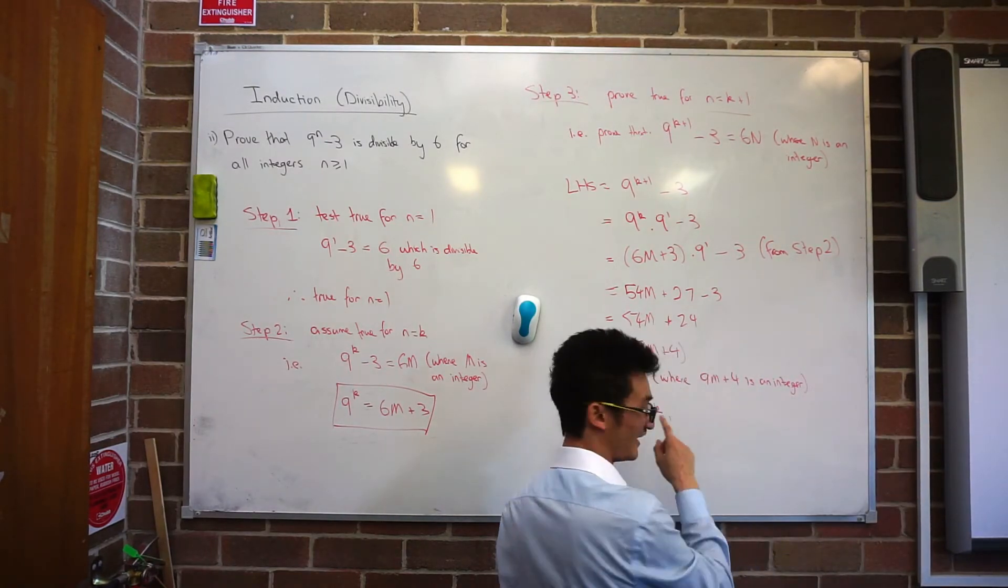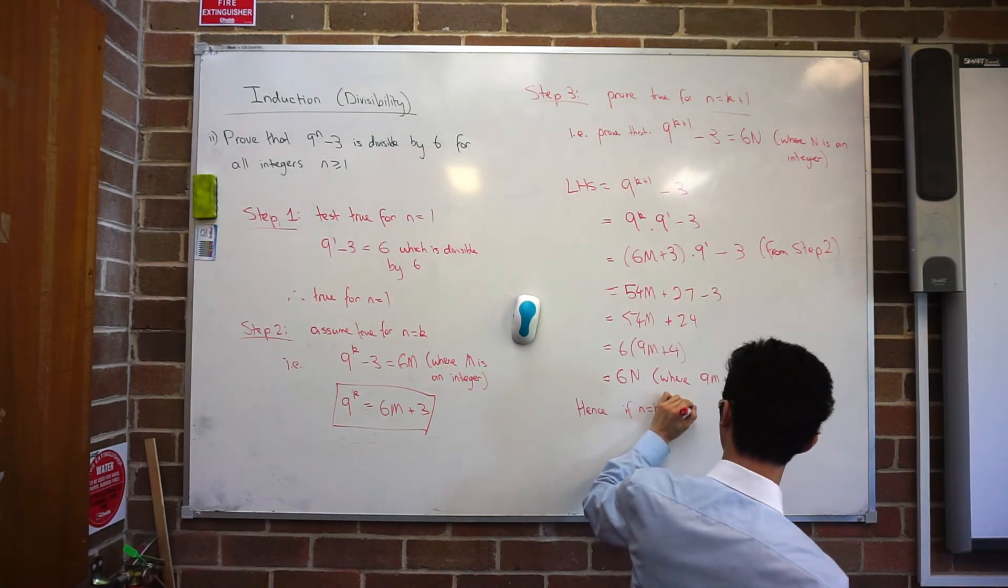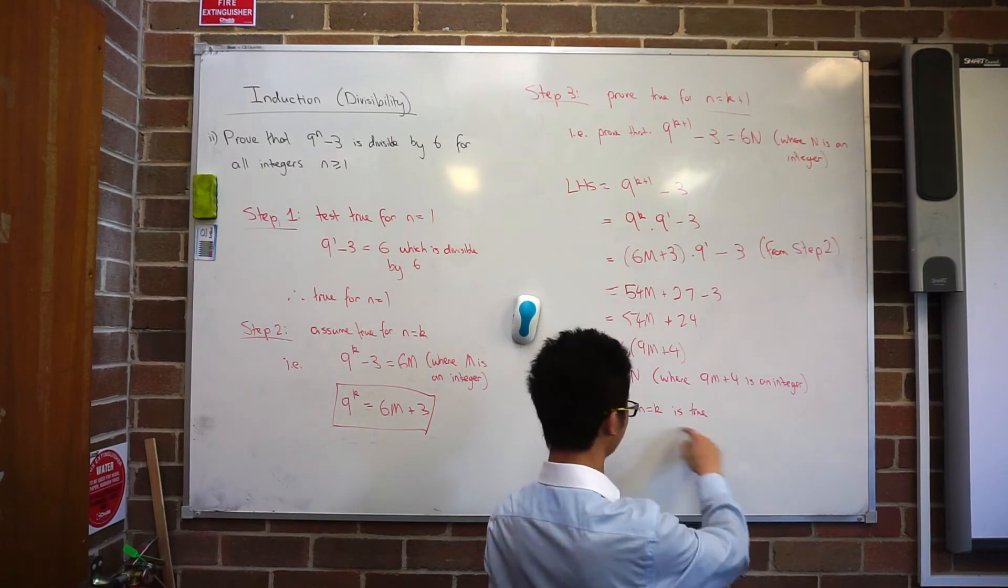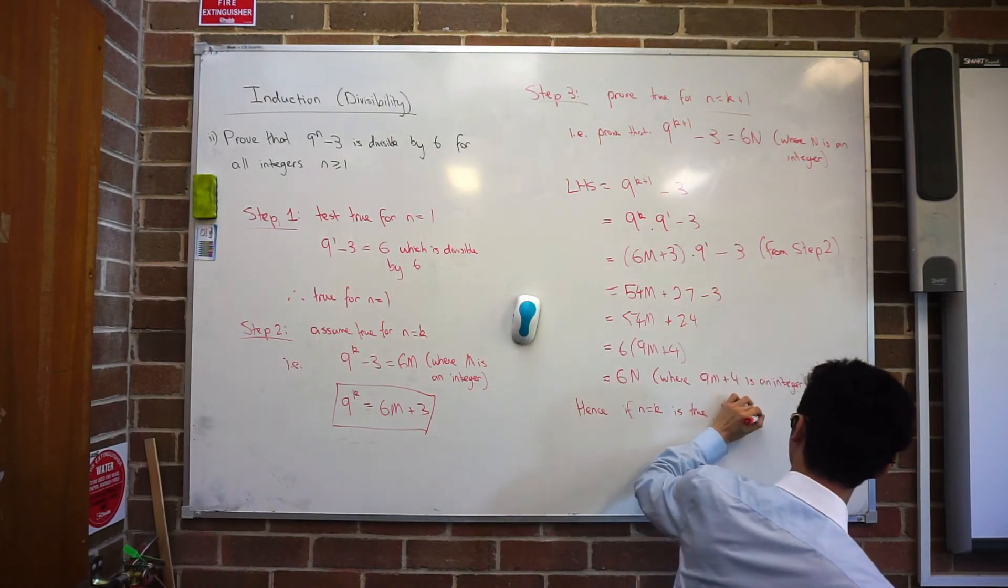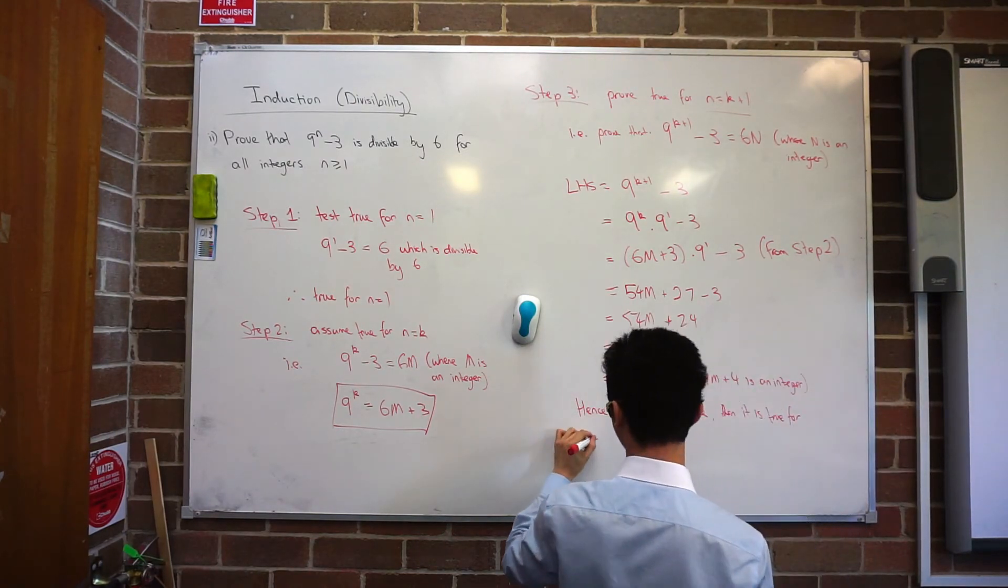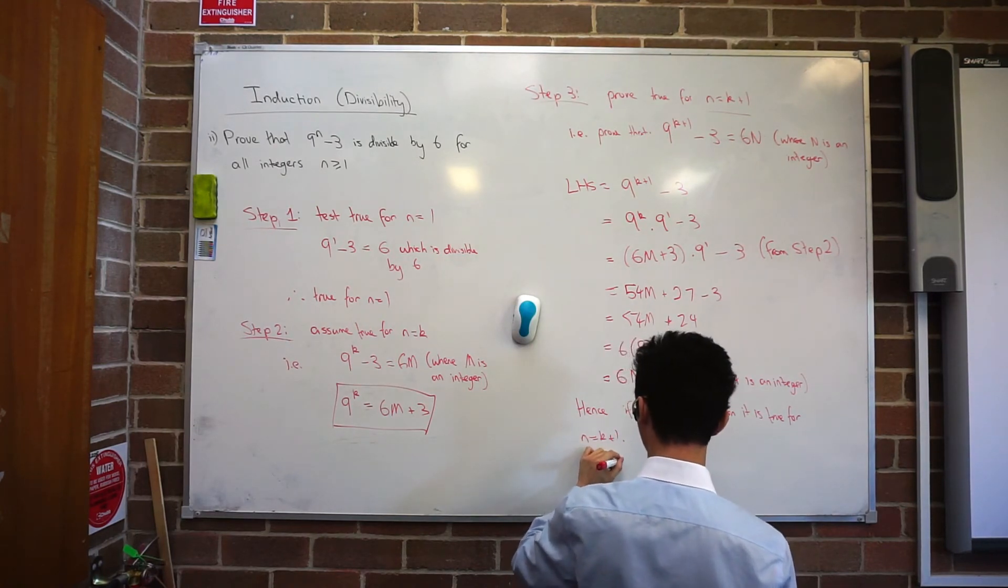One more line above it. Hence, if the result is true for n equal k, then it is true for n equals k plus 1. Yeah, I might write something different each time, but as long as you get the gist of it. Hence, if n equal k is true, then it is true for n equal k plus 1, and therefore true by mathematical induction.